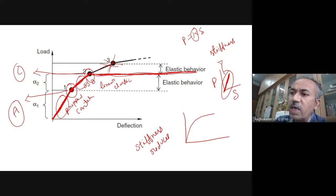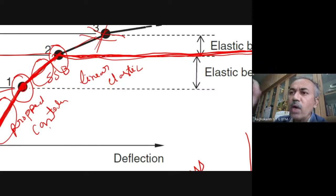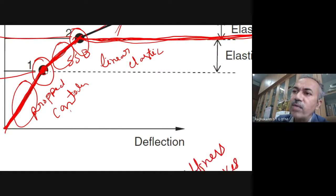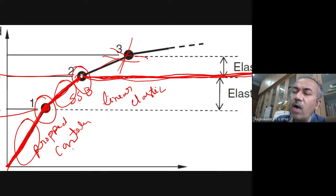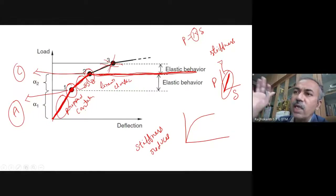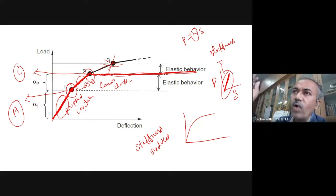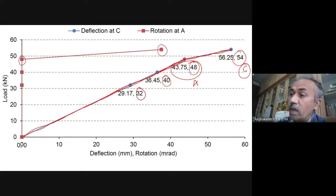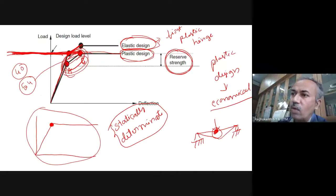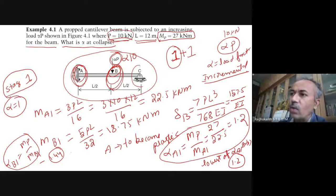If you see the stress-strain curve, it is linear up to this portion — elastic only. Once hinge has formed, propped cantilever converts to simply supported. You have the second hinge here. For fixed-fixed or higher indeterminacy, you have more hinges. Plastic analysis is essentially linear elastic analysis, but you may have to do it three or four times until the structure collapses.